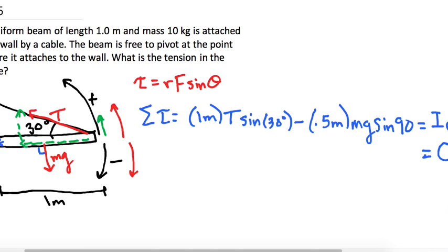Okay, so now let's rewrite what we have. So we have the radius, which is one meter, times T, times the sine of 30 degrees,